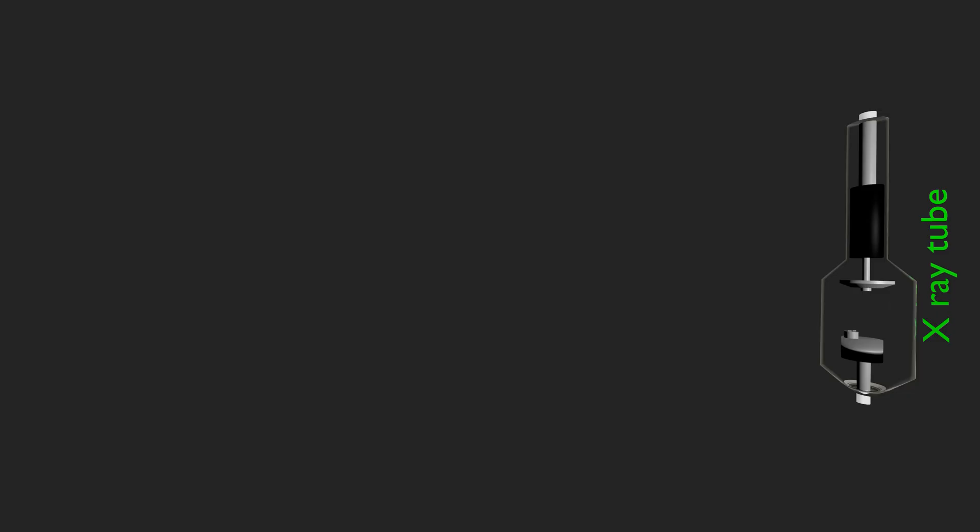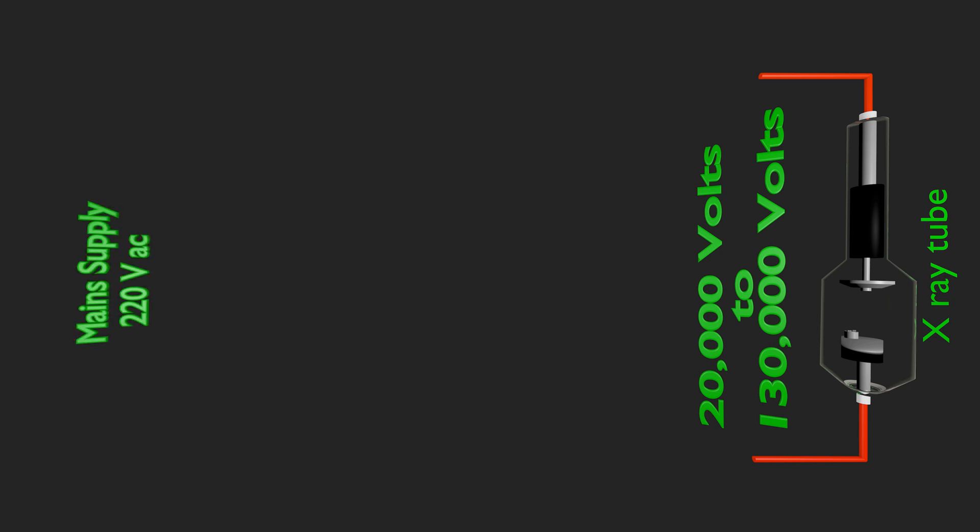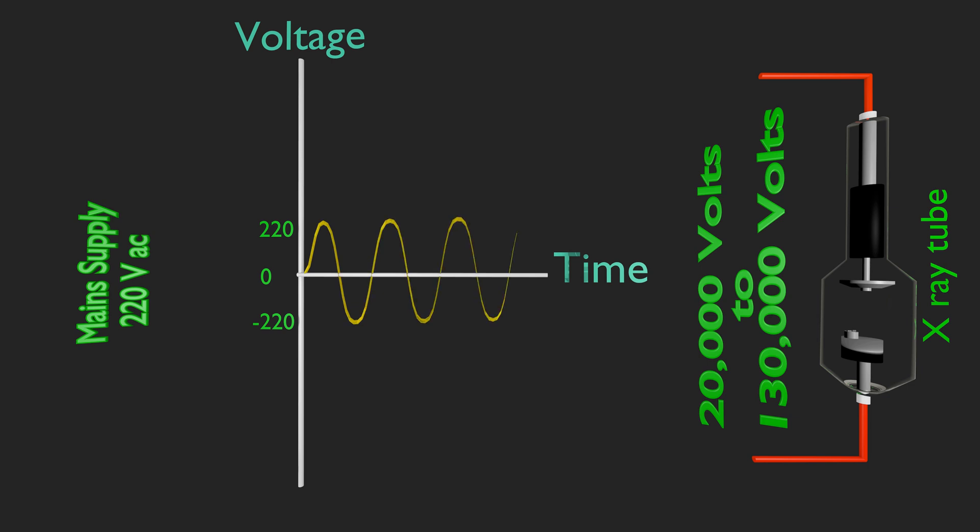X-ray tubes need an input voltage of 20,000 volts to 130,000 volts to be applied across its anode and cathode. Whereas, a single-phase mains supply is about 220 volts or three-phase power supply of 440 volts alternating power supply.